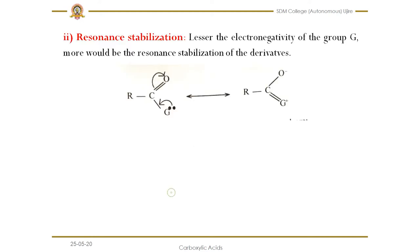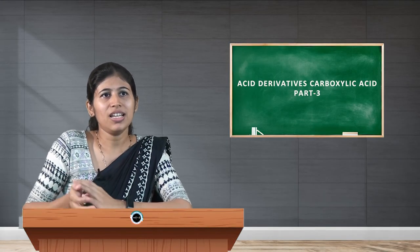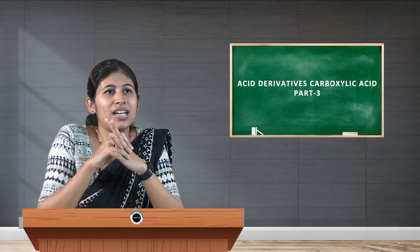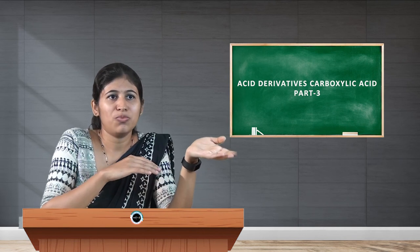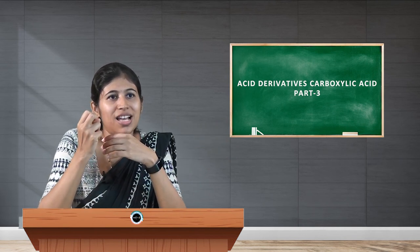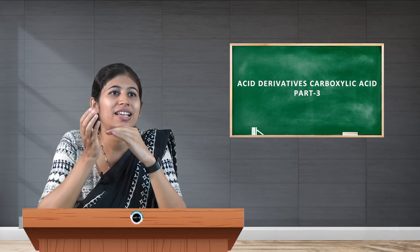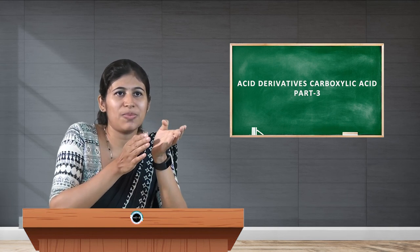The second factor is resonance stabilization, which mainly depends on the lone pair electrons present in the G group. The G group should donate its lone pair electron toward the carbonyl carbon to form a pi bond. For example, halogens also have lone pair electrons, but since they are highly electronegative they do not donate their lone pair easily into resonance. Therefore, lesser the electronegativity, the more easily they donate lone pairs toward resonance stabilization. Among the four, amines are least electronegative and so most readily donate.